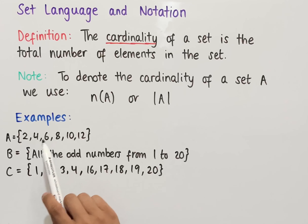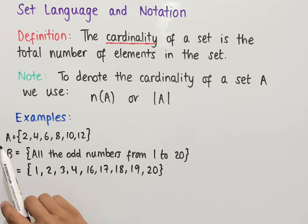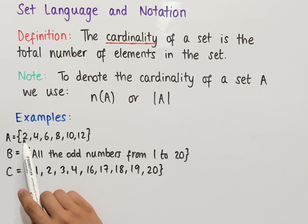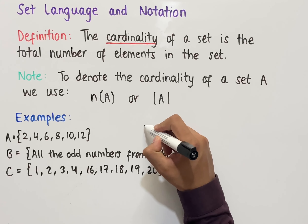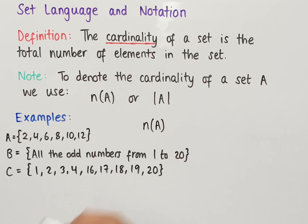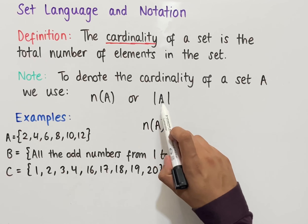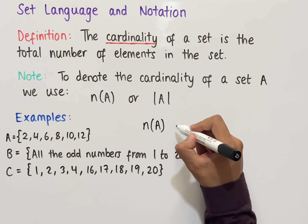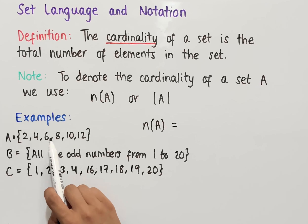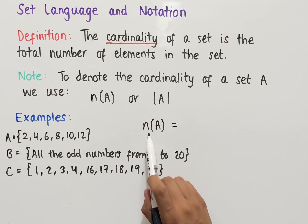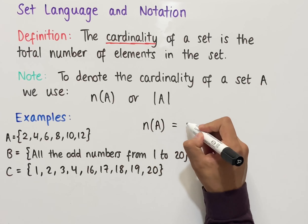Let's look at some examples of where we use cardinality notation. We've got three sets here. The first set has the elements 2, 4, 6, 8, 10, and 12. So if we wanted to work out the cardinality of set A, we could write either N(A) or |A|, and this would equal the number of elements within the set — so the cardinality of set A is equal to 6.